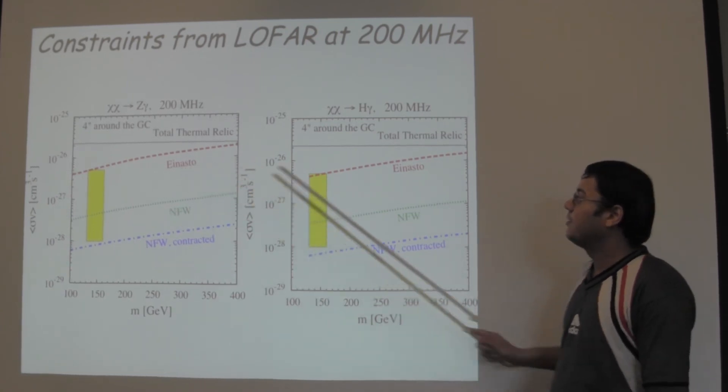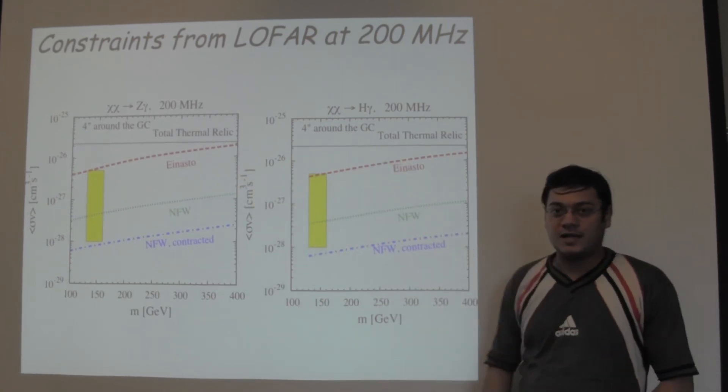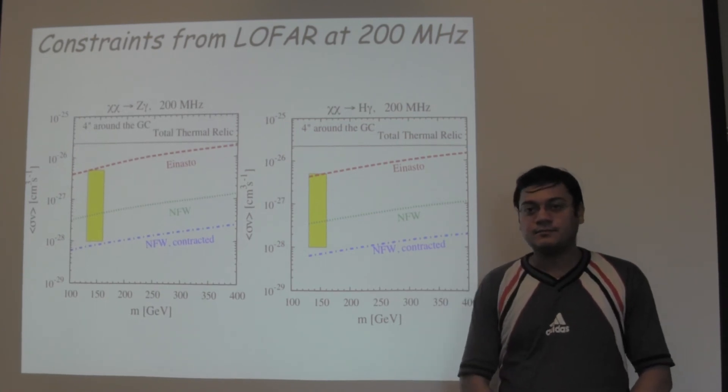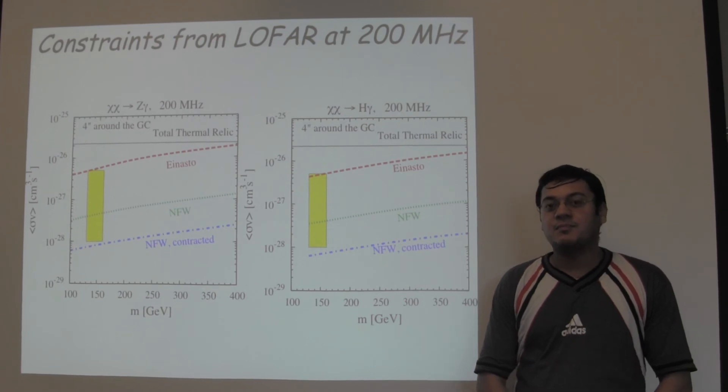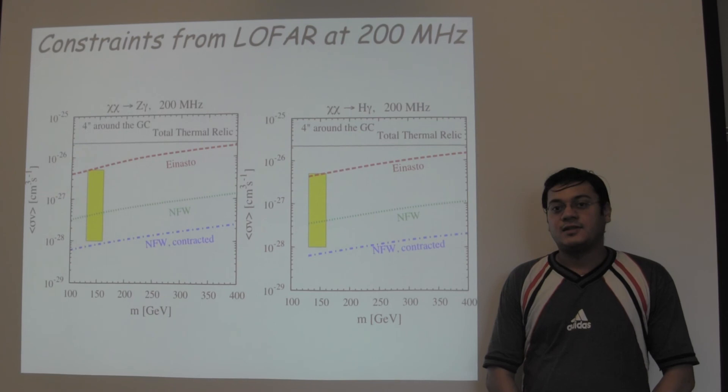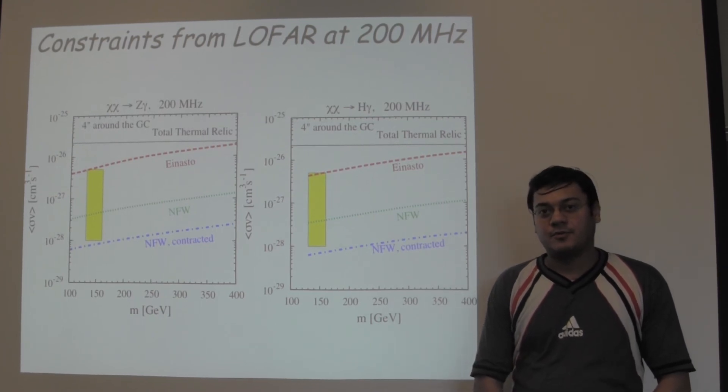For the EINASTO profile, LOFAR might take a little longer time of observation at the galactic center. I hope I have been able to convey the main message in our paper. Using present day radio data, the presence of the gamma ray line is in slight tension if it arises from a NFW contracted dark matter profile.